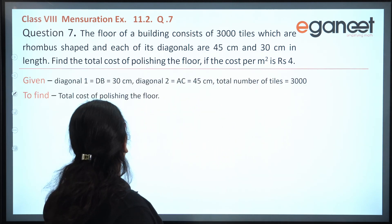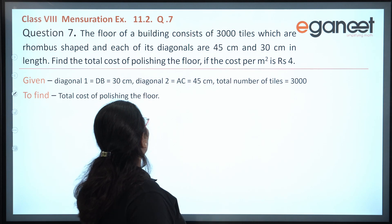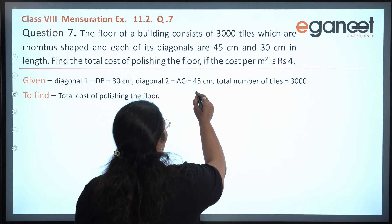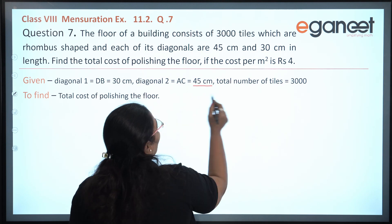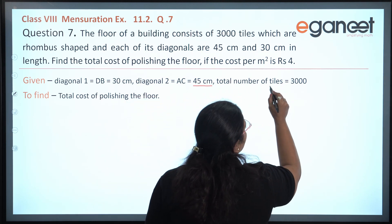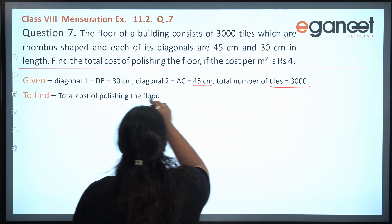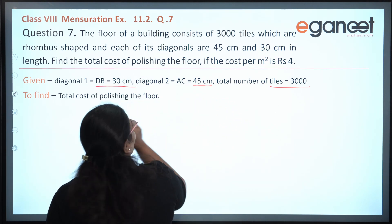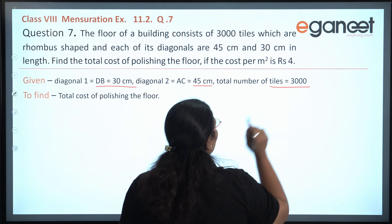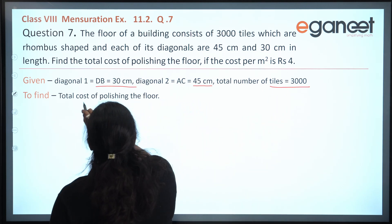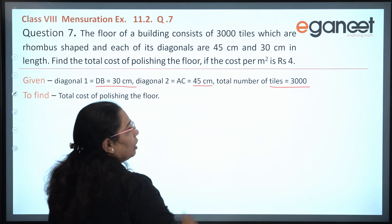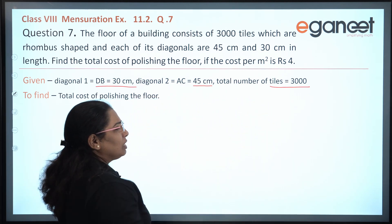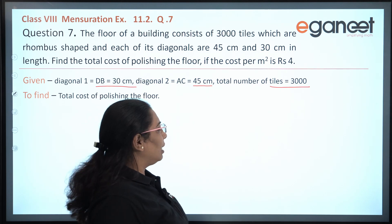What is given? Diagonal DB is equal to 30 cm and diagonal AC is equal to 45 cm. Total number of tiles are 3000 — for each tile they have given two diagonals. We have to find out the total cost of polishing the floor.